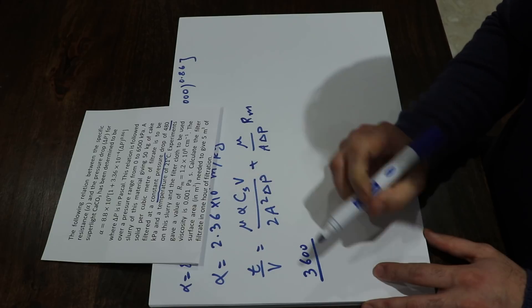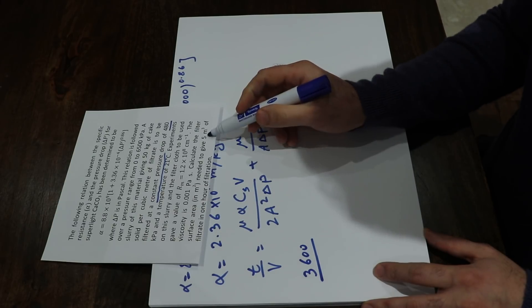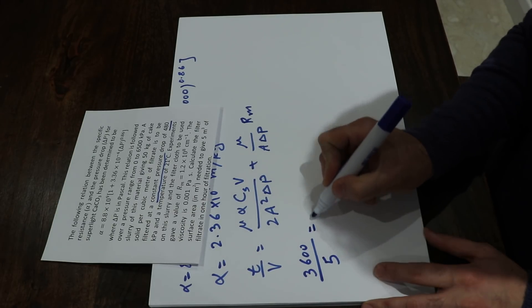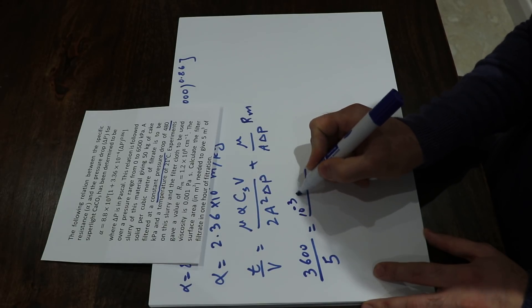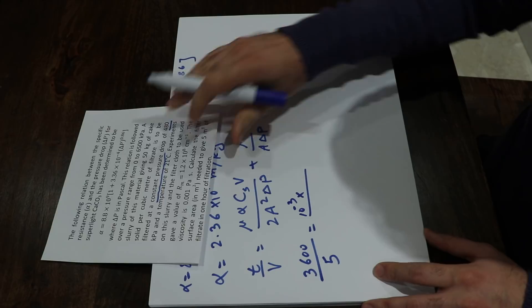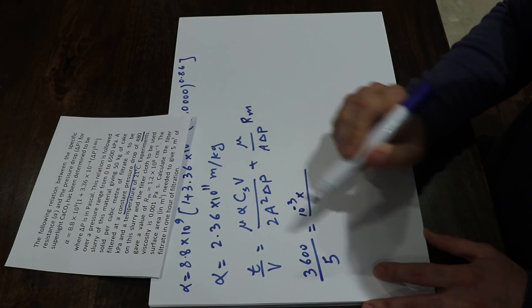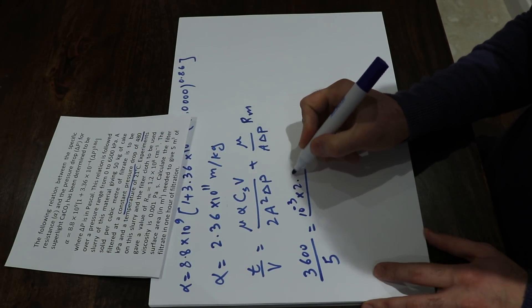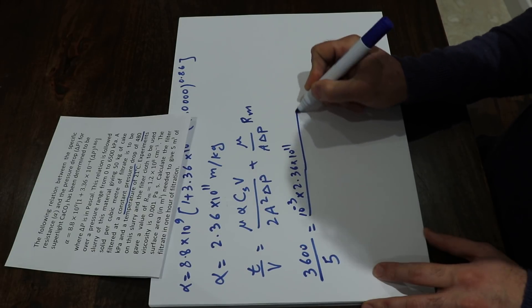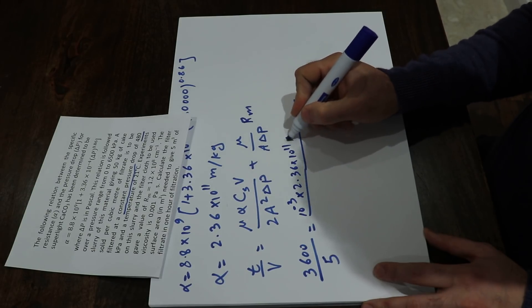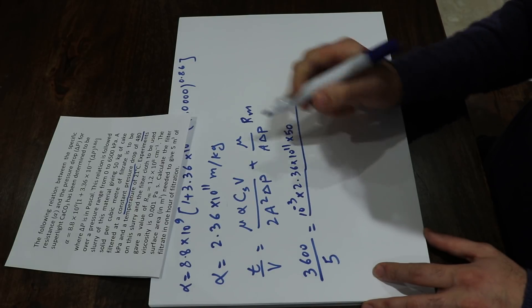This equals mu, that is 10 to the minus 3, times alpha, which you already calculated from this part, that is 2.36 times 10 to the power of 11, times C_S, that is 50, given in the question, times V, 5.